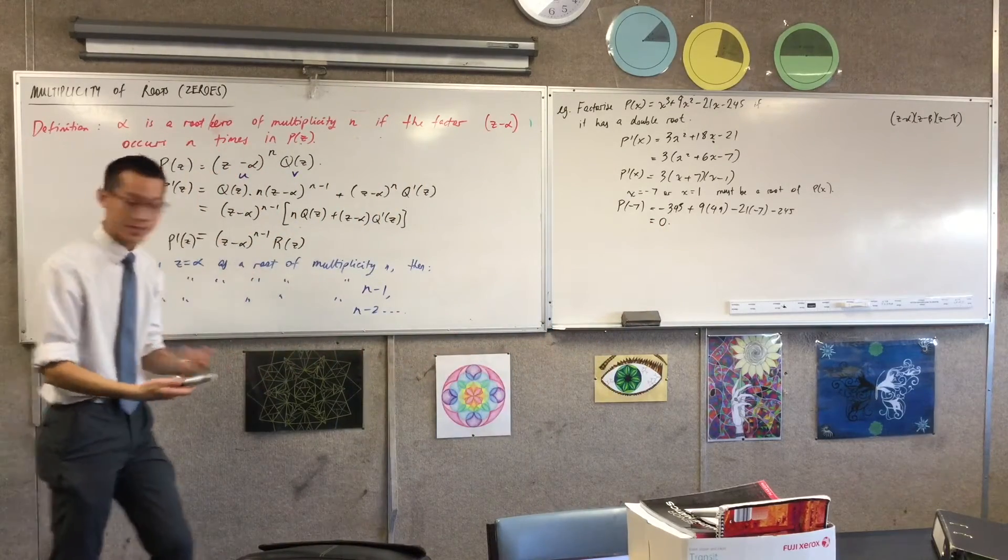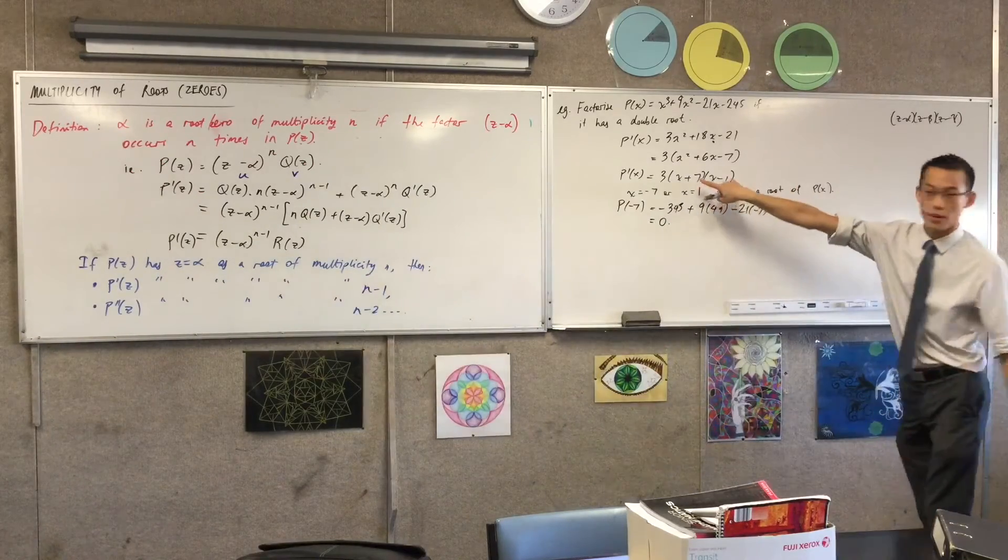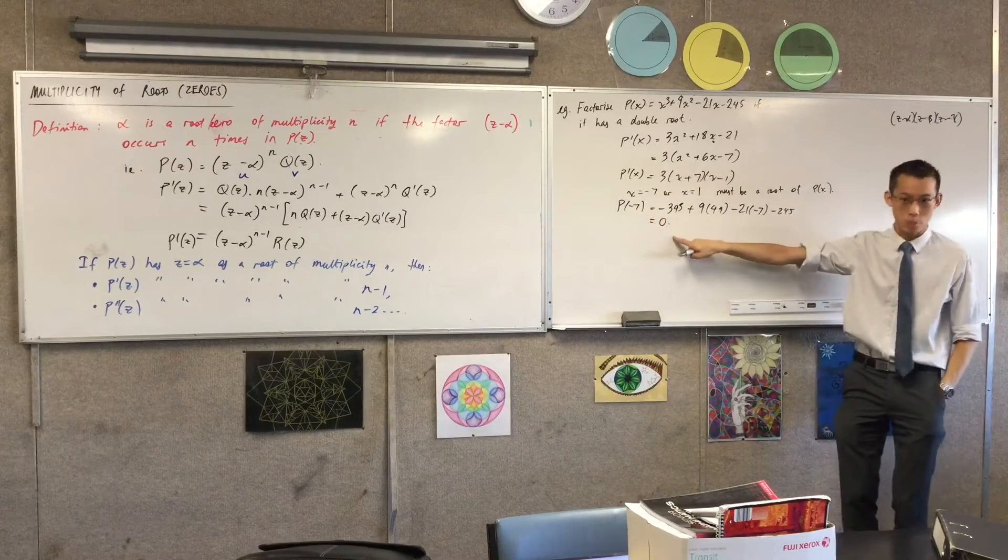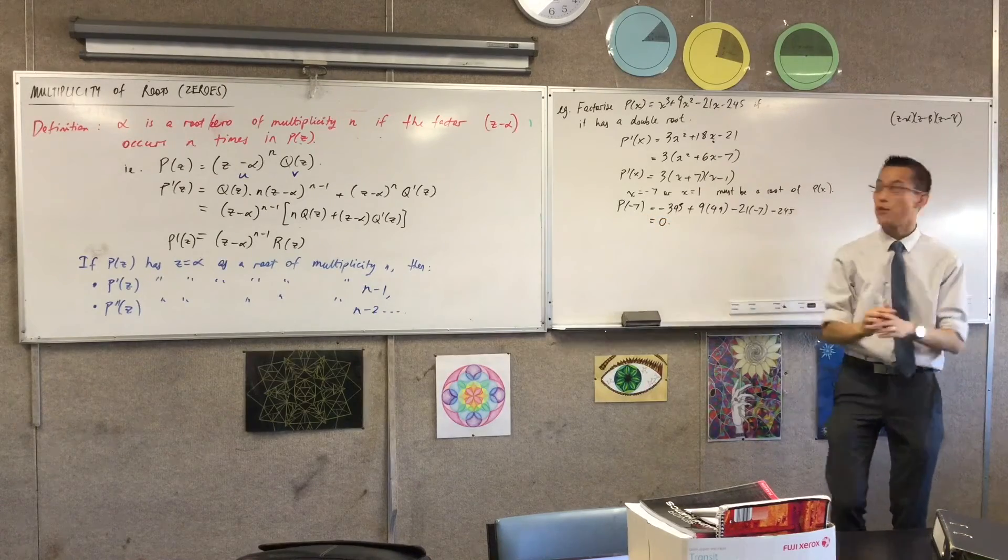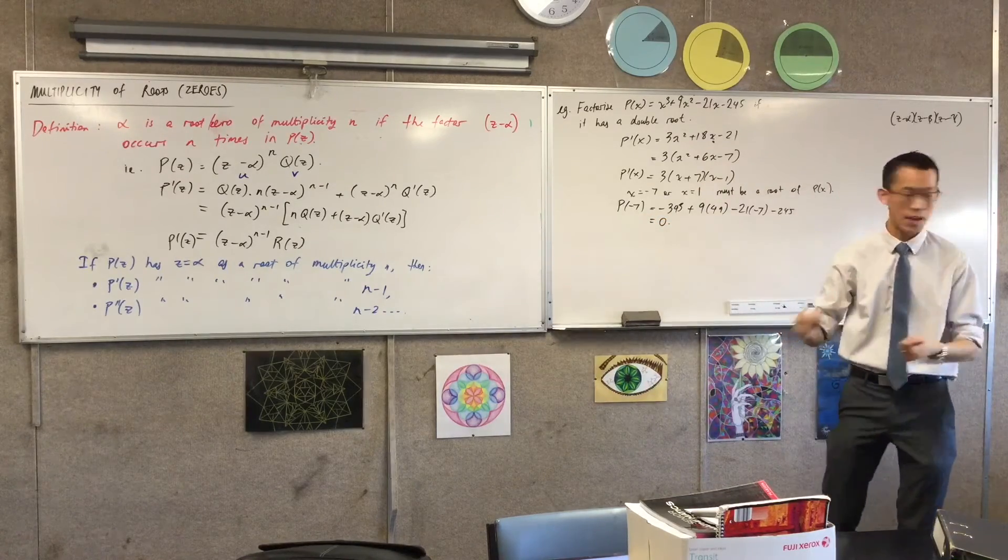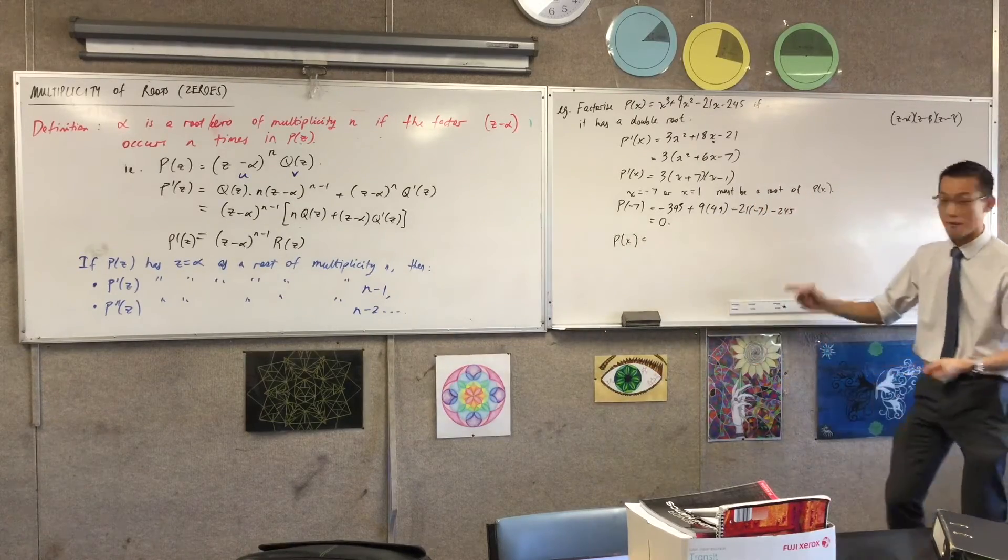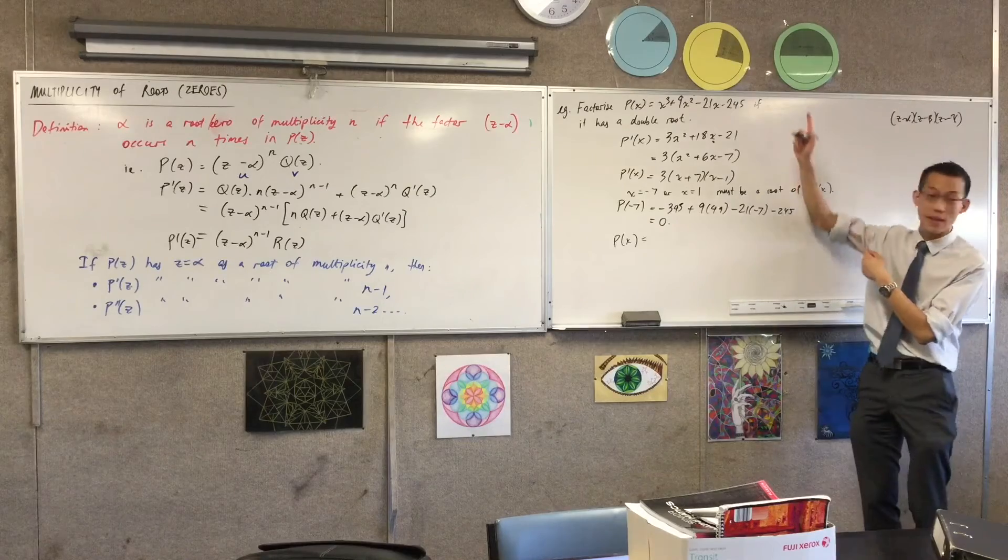So therefore, what have I established? I've shown, okay, I know where the stationary points will be. Now I know that this stationary point is one of the roots. So therefore, what can I say about P of x? If I know, I've found the double root. So what does that tell me about the factorization?